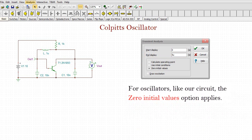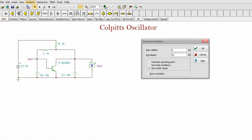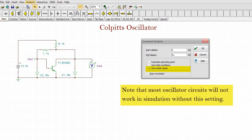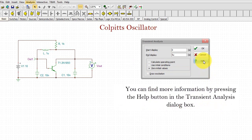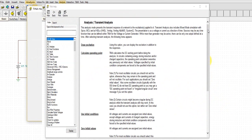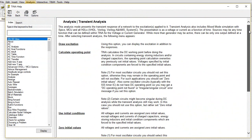For oscillators like our circuit the zero initial values option applies. Note that most oscillator circuits will not work in simulation without the setting. For amplifier and many other circuits you should use the default calculate operating point option. You can find more information by pressing the help button in the transient analysis dialog box.